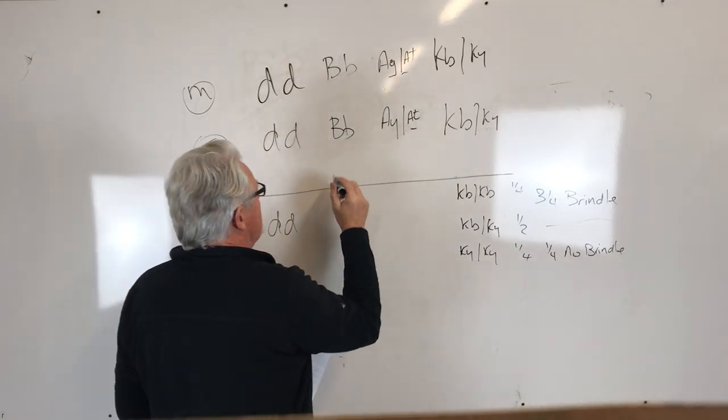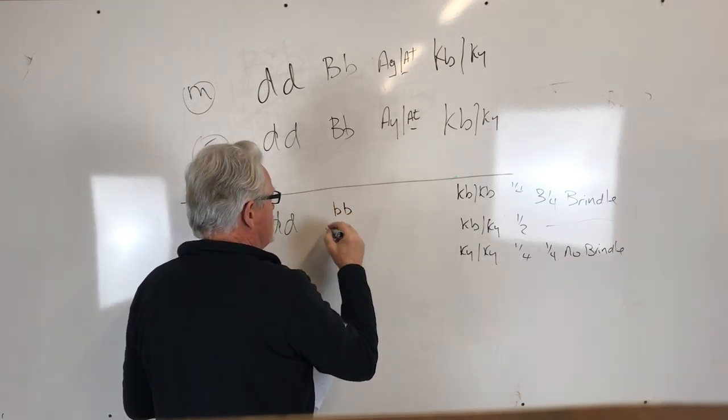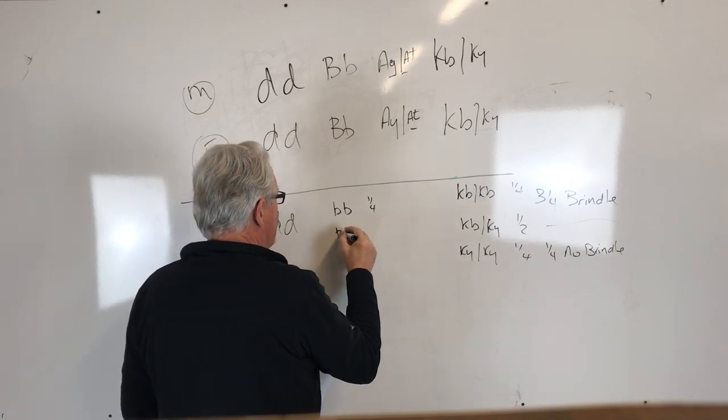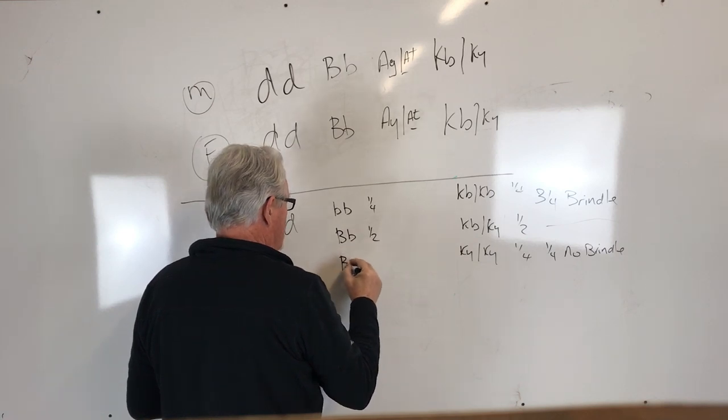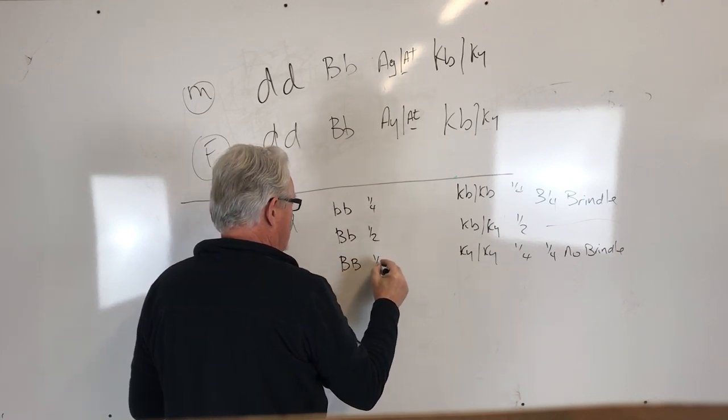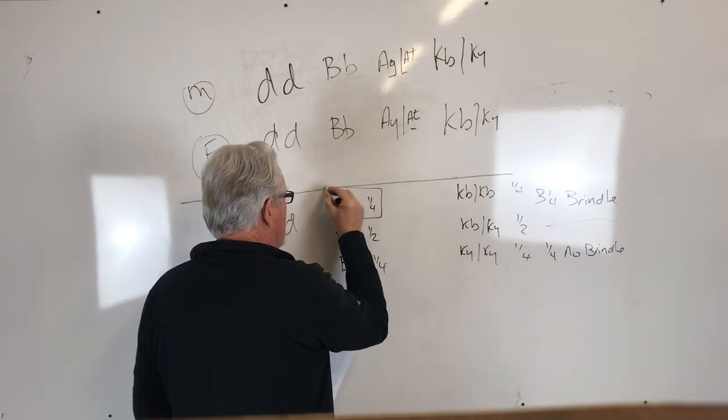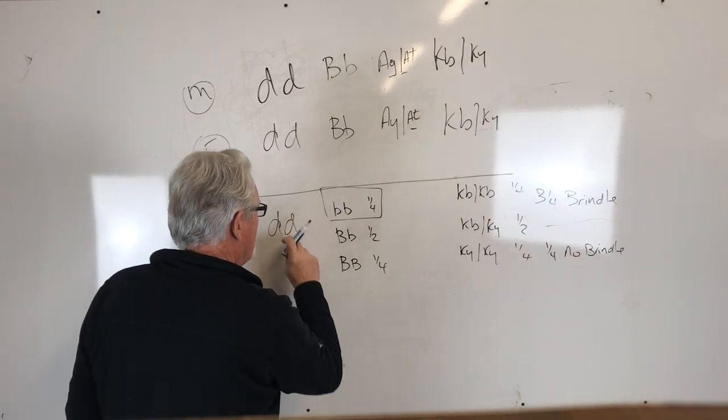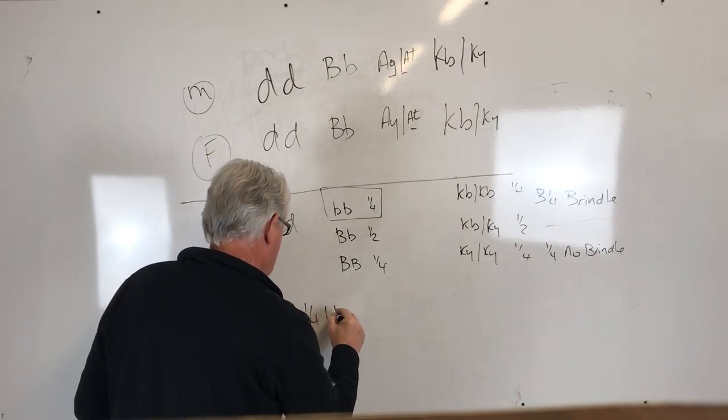Similar situation here. Your choices are to get BB chocolate dogs, you'll get that one quarter of the time. Or you'll get BB little b chocolate carriers, you'll get that half the time. Or you'll get no chocolate at all, one quarter of the time. So only one quarter of the dogs are going to be chocolate. And those with a blue will be lilac, so you're going to get one quarter lilacs.